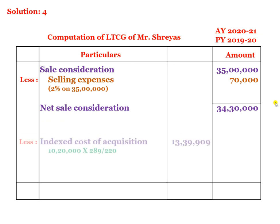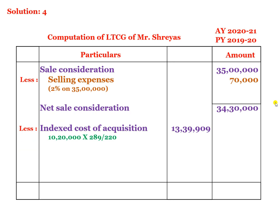Less: indexed cost of acquisition. Purchase price plus brokerage is 10 lakhs 20,000. We apply the cost inflation index: 10,20,000 multiplied by CII of 289 divided by the CII of the year of acquisition, which is 2013-14, with CII value 220. So 10,20,000 into 289 divided by 220 equals 13,39,909.